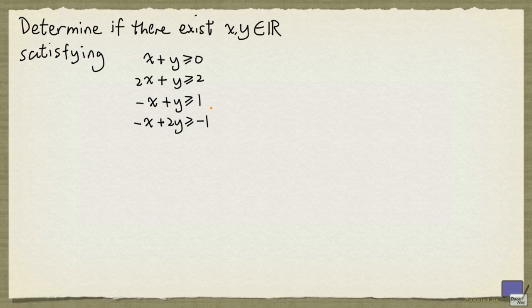We want to determine if there exist real numbers x and y satisfying this system of linear inequalities. Since there are only two variables and the numbers are rather nice, we can solve this graphically. But is there a way to deal with this algebraically?